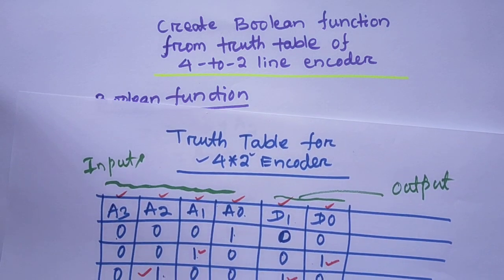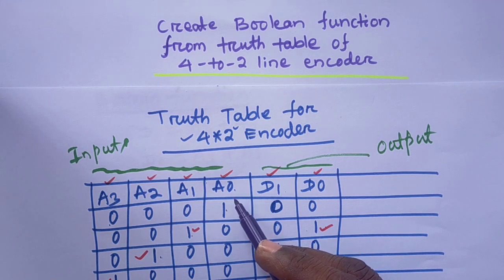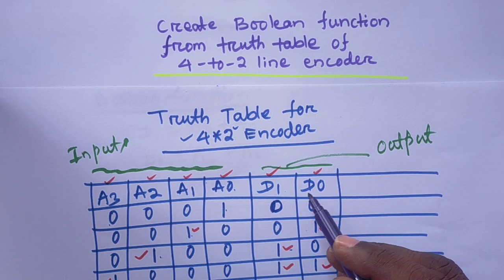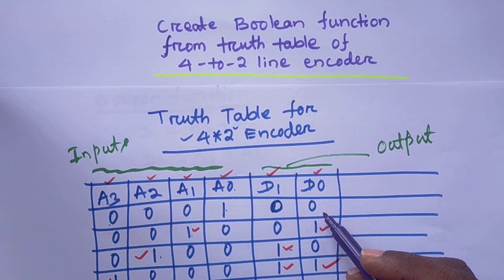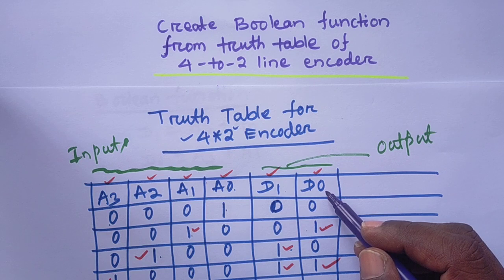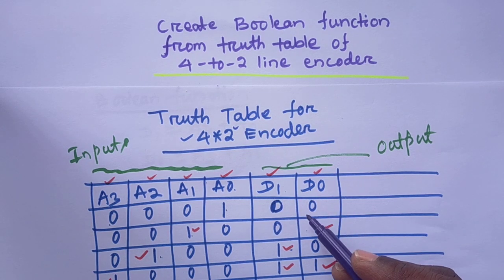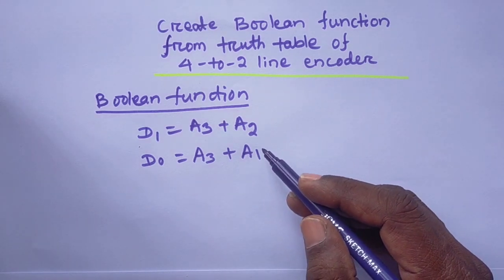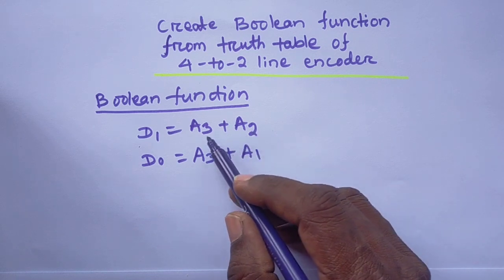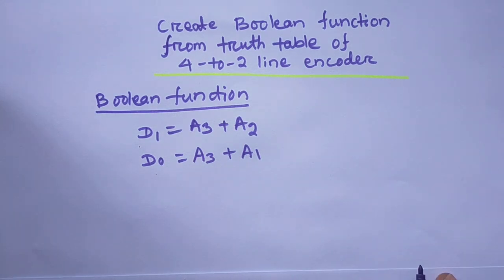So now it is very clear: wherever there is a value 1 for d0 or d1, we check which inputs provide that value of 1, and we consider those inputs for the Boolean function. The Boolean function is defined as: d1 = a3 + a2 (or a2 + a3), and d0 = a1 + a3 (or a3 + a1). In this way, we create the Boolean function.